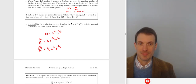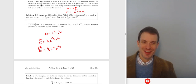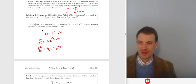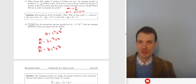A more complicated version of this problem would be if you had the production technology and had to back out the marginal product yourself. For the production function q = L^(1/4) · K^(1/8), a Cobb-Douglas production technology, find the marginal products of labor and capital and the marginal rate of technical substitution.